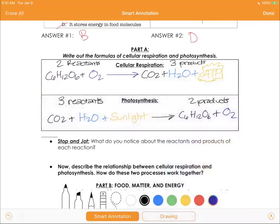So the stop and jot says, what do you notice about the reactants and products of each reaction? Well, if you look closely here, the reactants of cellular respiration are glucose and oxygen. The products of photosynthesis are glucose and oxygen. The products of cellular respiration are CO2, H2O, and ATP. And the reactants, the three reactants of photosynthesis are CO2, H2O, and sunlight. The only thing different between these two are the energy source. ATP is the energy source in cellular respiration, sunlight for photosynthesis. But if you look at them, they're literally opposite processes.